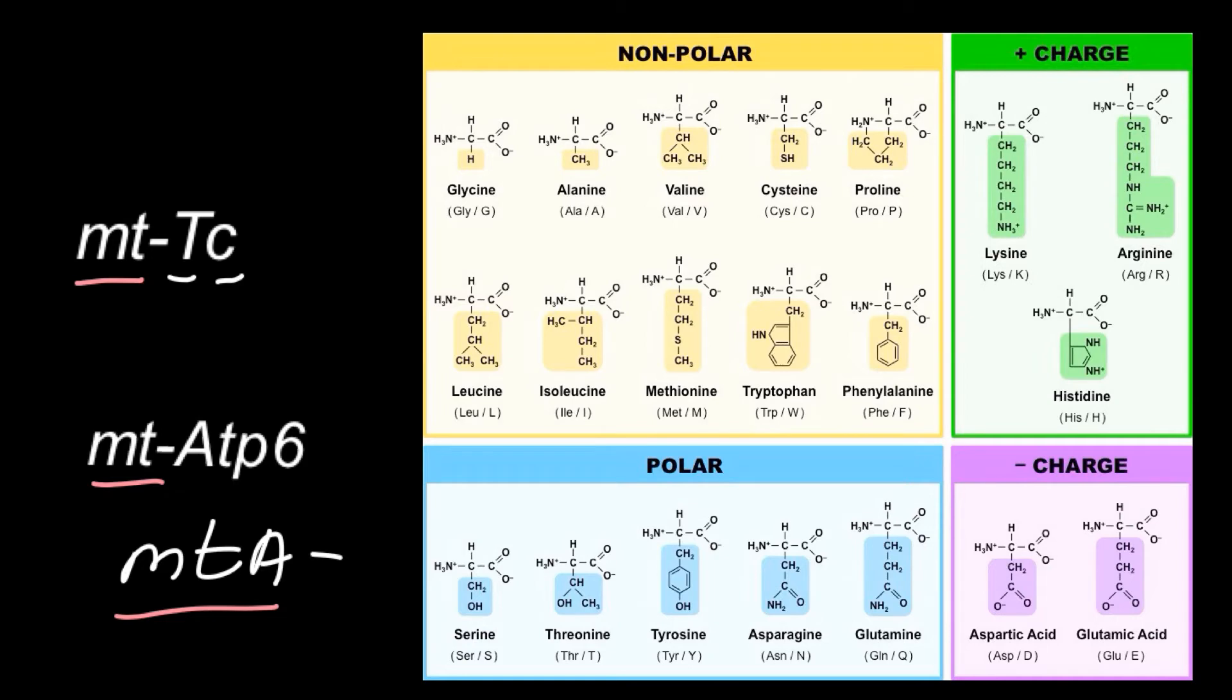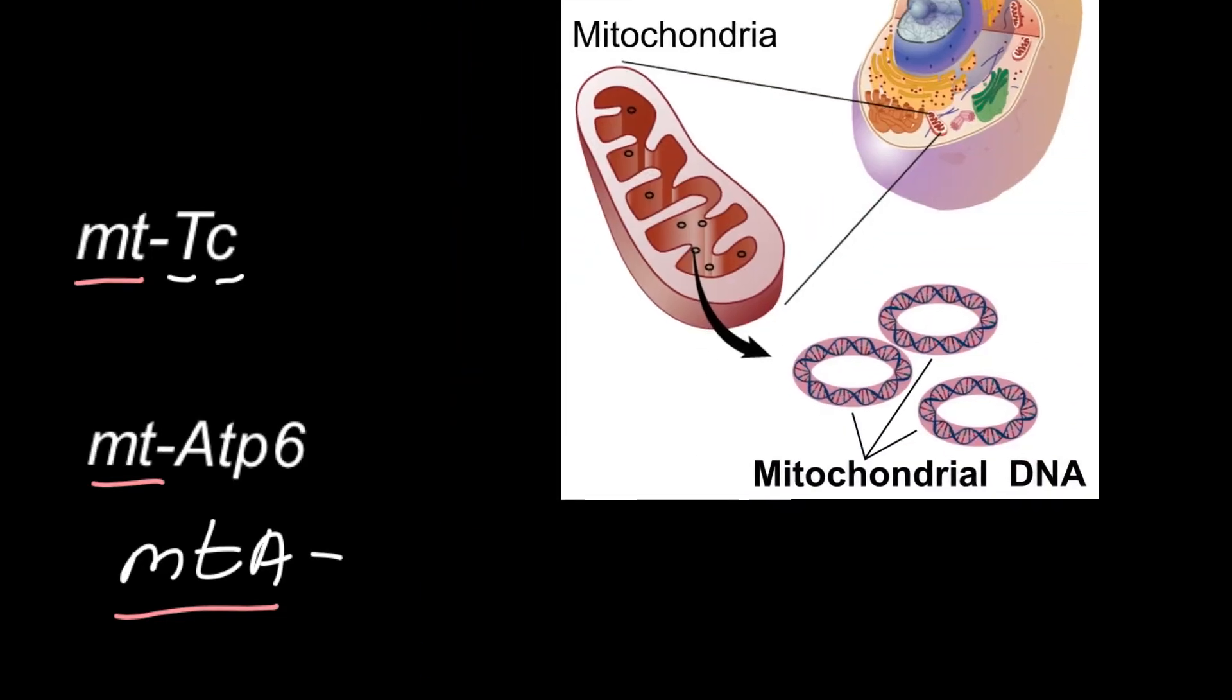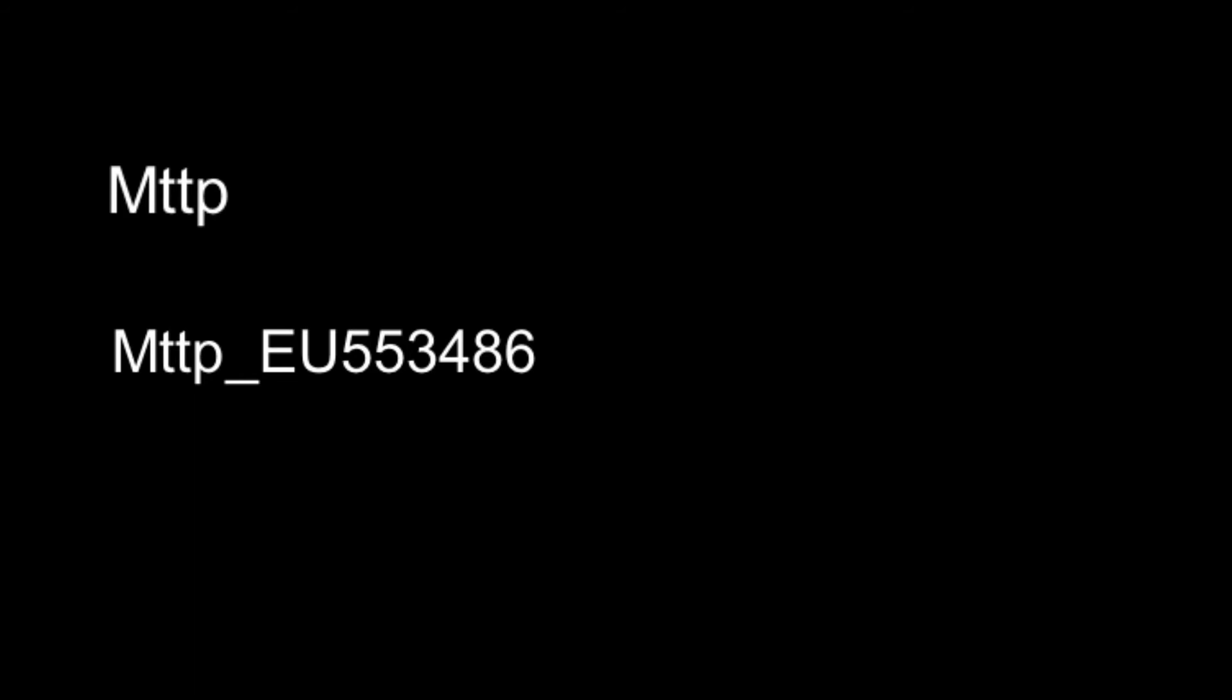Now let's talk about a new type of gene notation that I didn't show you before. For example, let's take such gene as Mttp, which stands for the Microsomal Triglyceride Transfer Protein. We also may find such variation of this gene like this one. Actually, a gene name that looks like this is much more common than a gene name that looks like this. We have here gene name, underline, some letters and number. In this video, I'm going to talk about alternative transcripts of the gene.